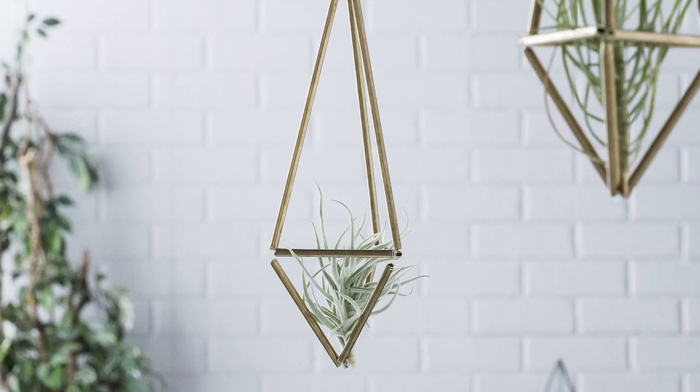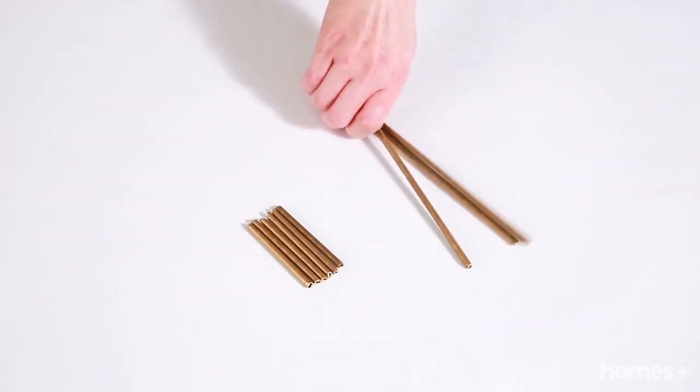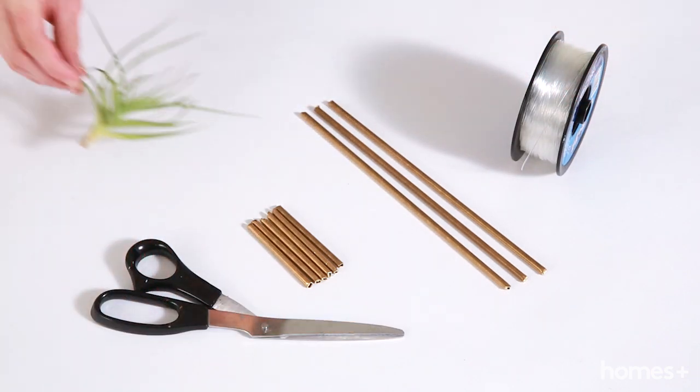To make your air plant hanger you will need 6 pieces of brass tubing, 3 pieces of brass tubing, a ball of fishing twine, scissors, and an air plant.